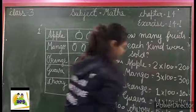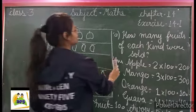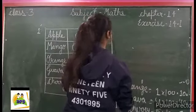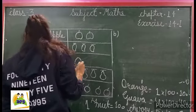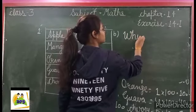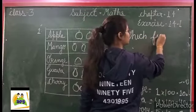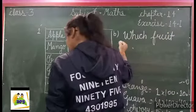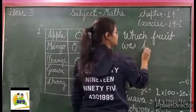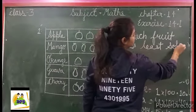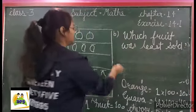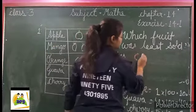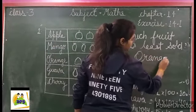Next question is which fruit was least sold? Which fruit was least sold? Means which one sold the least? Orange. Answer is orange.